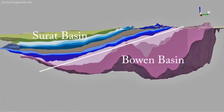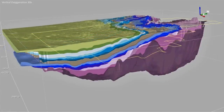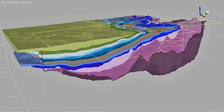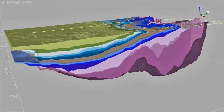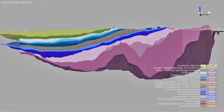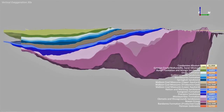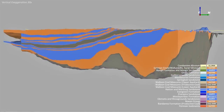Whilst to the north, the Surratt Basin thins until it no longer exists. As we move northwards, the younger sediments of the Surratt Basin thin and disappear, while the older and deeper sediments eventually reach the surface until only the formations of the Bowen Basin exist.